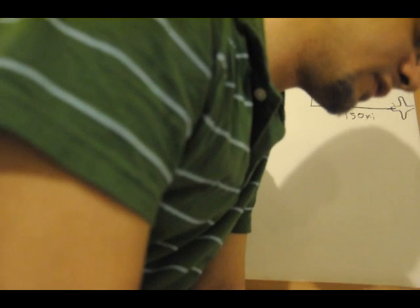Now we'll do this one. It says an air traffic controller spots two planes at the same altitude converging on a point as they fly at right angles to each other. One plane is 150 miles from the point moving at 450 miles per hour, the other plane is 200 miles from the point moving at 600 miles per hour. At what rate is the distance between the planes decreasing? How much time does the air traffic controller have to get one of the planes on a different flight path?